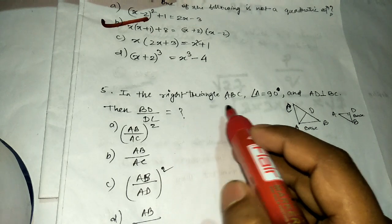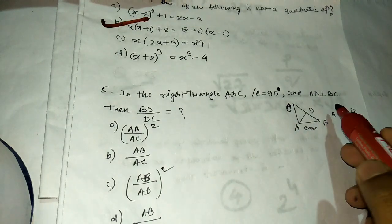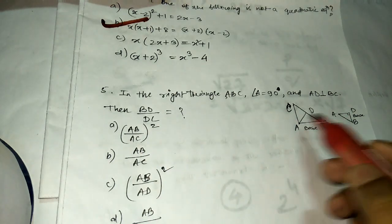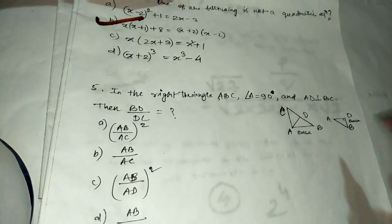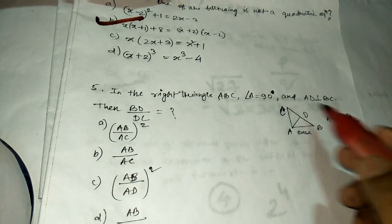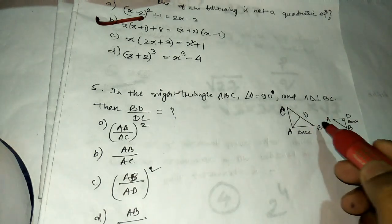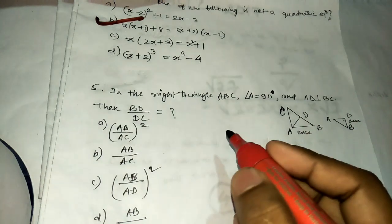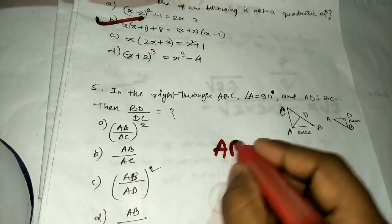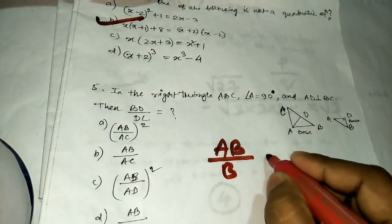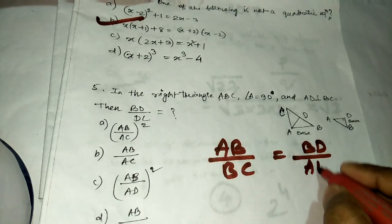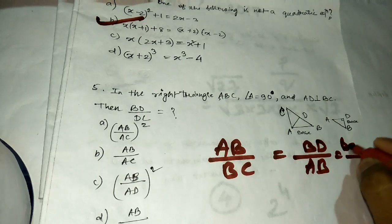Question number five: in right triangle ABC, angle A is 90°, and AD is perpendicular to BC. Find BD/DC. We take the bigger triangle and the smaller triangle. By the similarity rule, since all right triangles here are similar, we write AB/BC = BD/AB, taking base by hypotenuse.